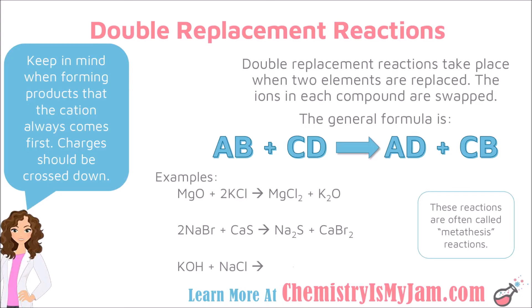My final example uses one of our polyatomic ions. OH is the polyatomic ion hydroxide, taking the place of B. So potassium is A and the polyatomic is B, and it is going to stay together in the reaction. I have potassium hydroxide as AB and sodium chloride as CD. A and D are going to come together, so potassium and chloride are going to form the compound potassium chloride. Potassium is plus 1 and chlorine is minus 1, so no additional subscripts are needed. Then C and B, sodium and hydroxide, are going to come together to form a compound. Sodium has a charge of plus 1 and hydroxide has a charge of minus 1, so no additional subscripts are needed. This reaction is balanced the way it is written.